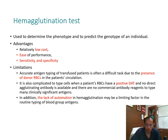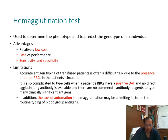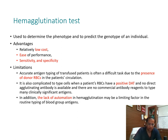Hemagglutination is used to determine the phenotype and predict the genotype of individuals. Its advantages include ease of performance and low cost; sensitivity and specificity have been good, which is why it has sustained over time. However, it has limitations: when donor blood is circulating in a patient, accurate antigen typing is often difficult. It is also complicated when patient RBCs have a positive DAT, or in autoimmune hemolytic anemia where we need to know the underlying alloantibodies. There is also often a lack of automation in hemagglutination.